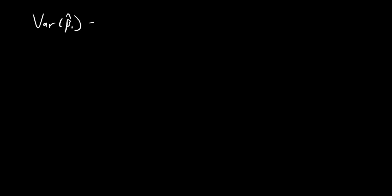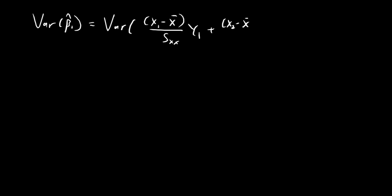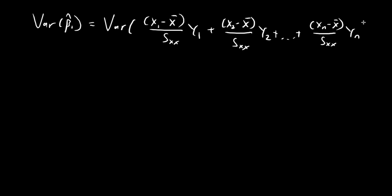Now I want to find the variance of beta 1 hat, and I'm going to express beta 1 hat explicitly. Beta 1 hat is essentially equal to (x1 minus its sample mean) divided by Sxx, times y1, plus (x2 minus the sample mean) divided by Sxx, times y2, and this goes on all the way to (xn minus the sample mean of x) divided by Sxx, times yn.